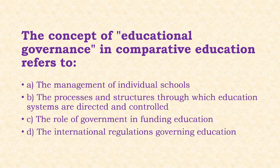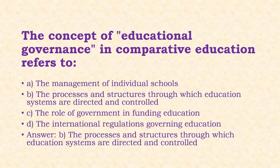Next: The concept of educational governance in comparative education refers to the process or structure through which education systems are directed and controlled. Options: management of individual schools; process through which education systems are directed and controlled; role of government in funding education; international regulations governing education. The answer is option B.